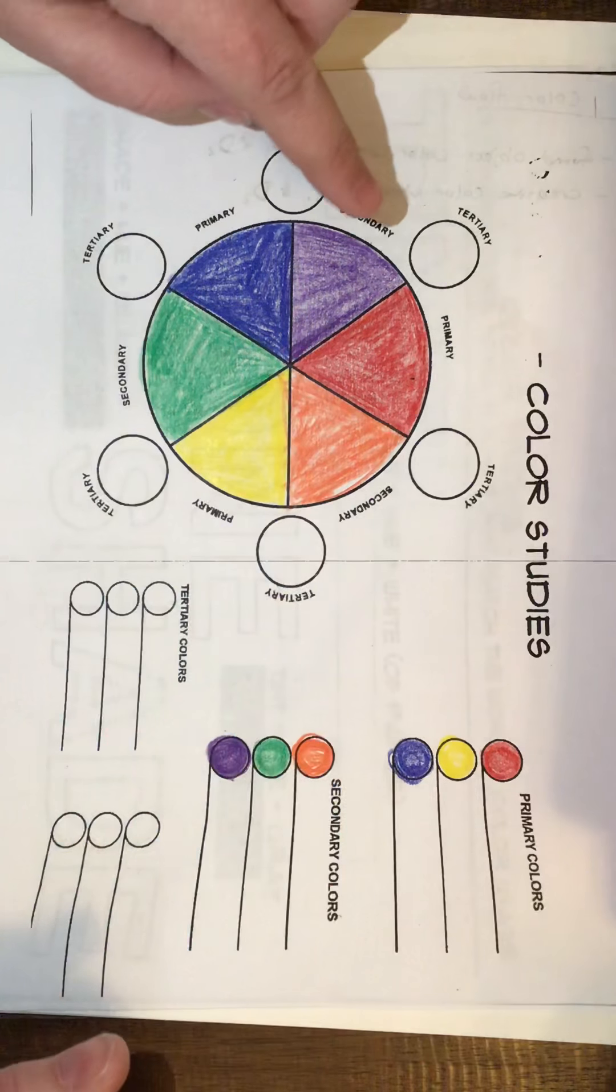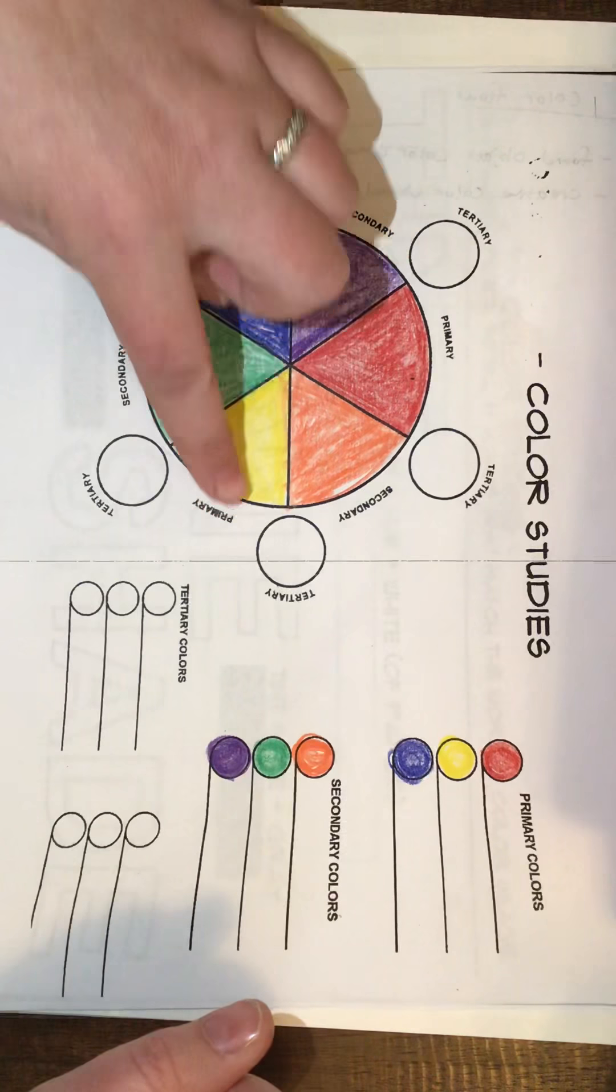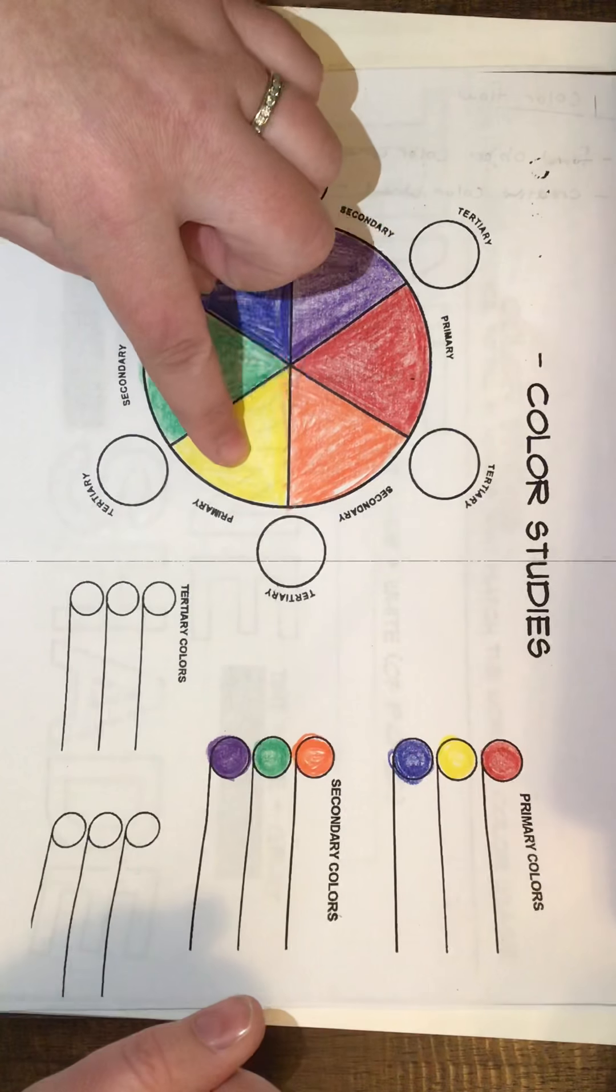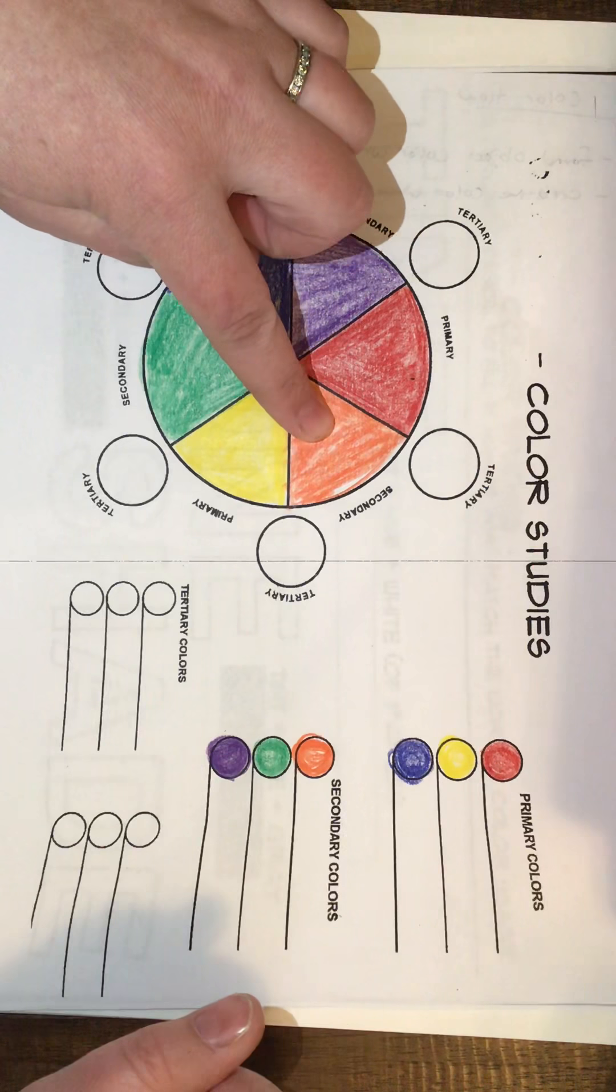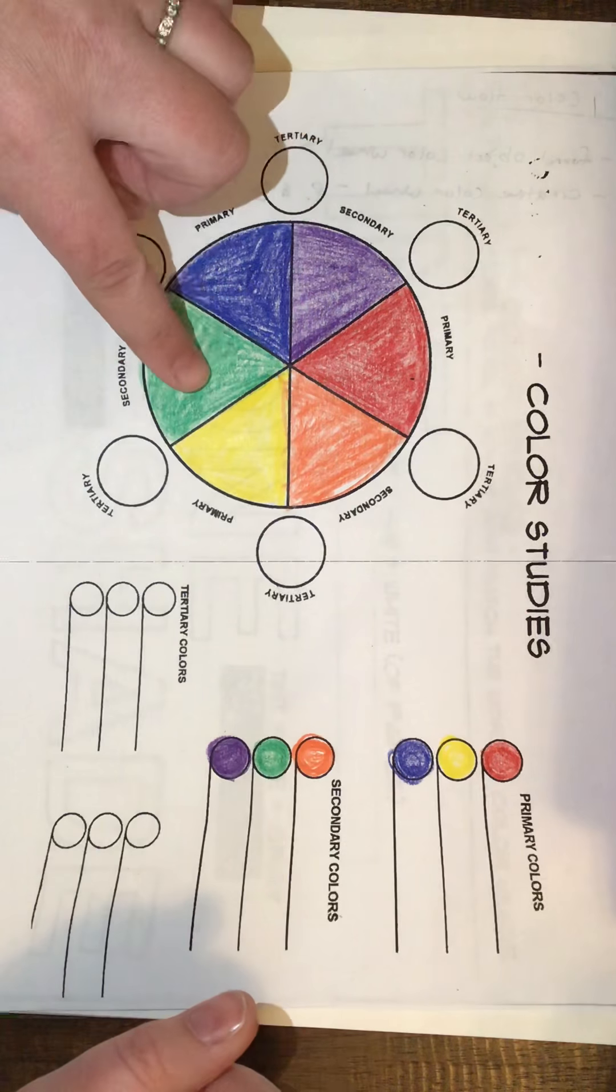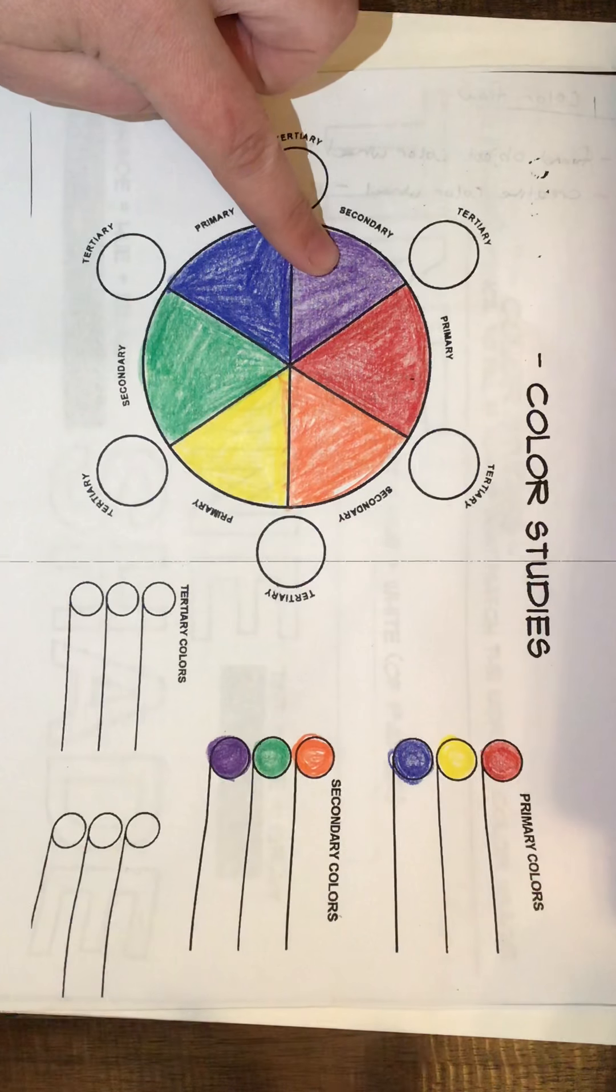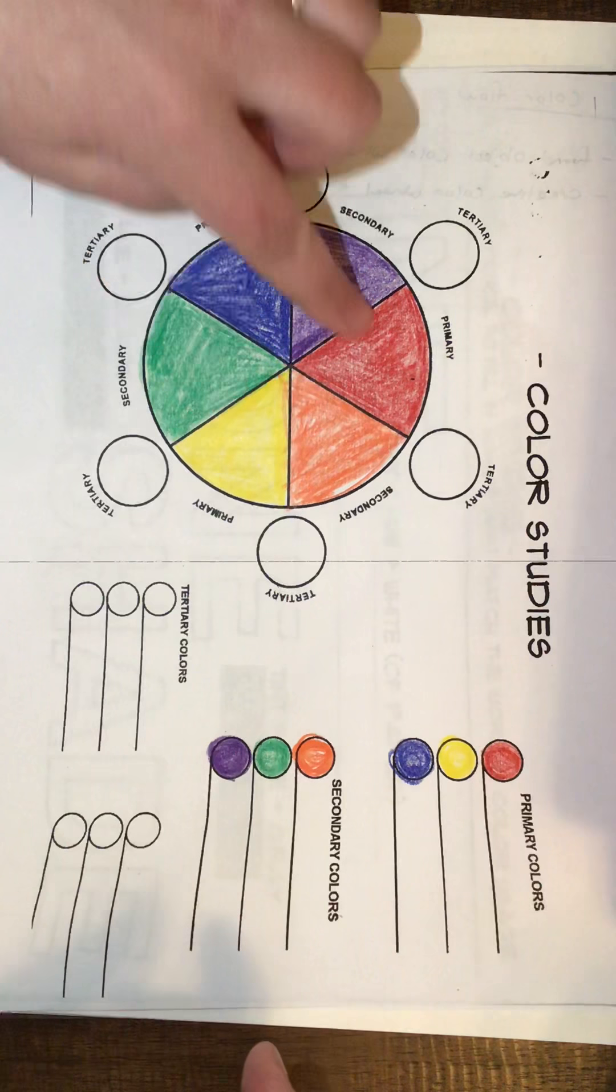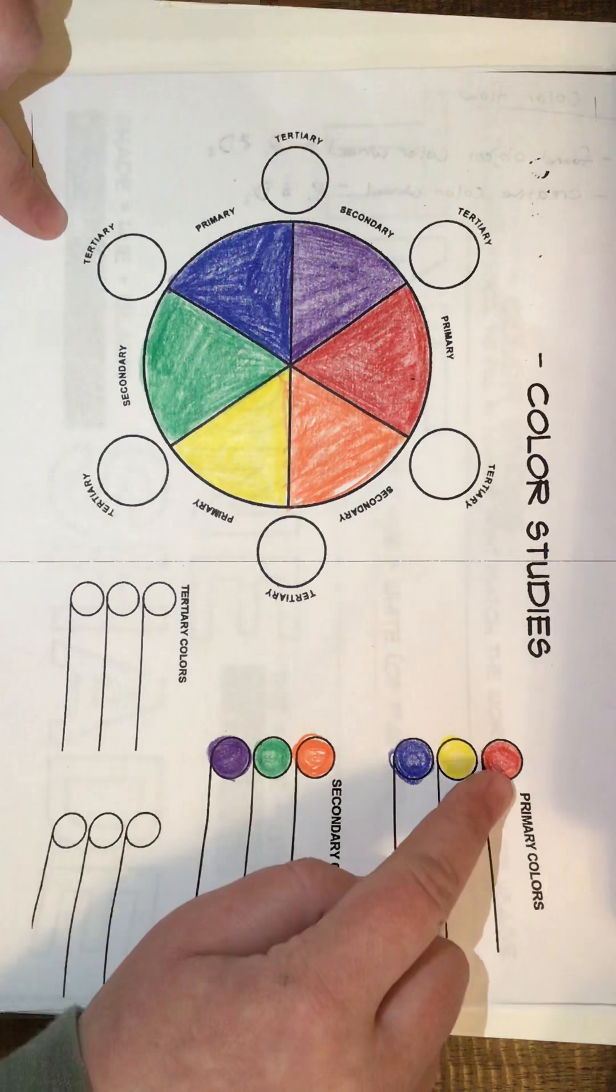So remember that your primary colors are red, yellow, and blue. When you mix two primary colors together you get a secondary color. So red and yellow is orange, yellow and blue is green, blue and red equals purple or violet, we usually say.